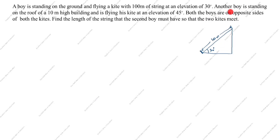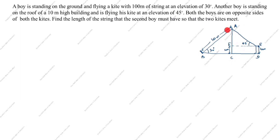The second boy is standing on the roof of a 10-meter high building, flying his kite at an elevation of 45 degrees. The ground level is here, this is 10 meters high, and the elevation is 45 degrees. We label the points a, b, c, d, e, f.